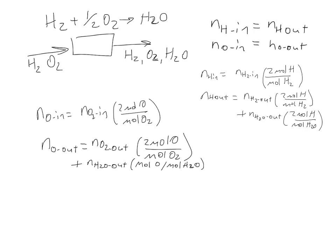Just like when we did material balances previously, we may use these equations to solve for unknowns. This is an alternative way to solve a reaction system — instead of writing balances on the molecular species, which are changing, we write balances on the atoms themselves. The number of atoms is not changing in versus out: hydrogen in must equal hydrogen out, oxygen in must equal oxygen out. We use equations like these to solve for unknown variables. That's the atomic balance way to solve a reaction system.